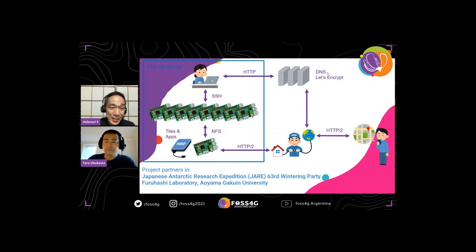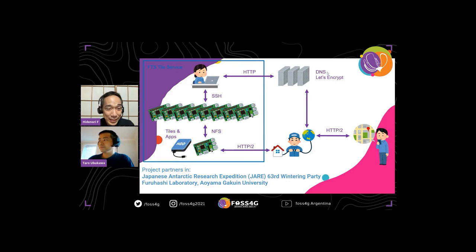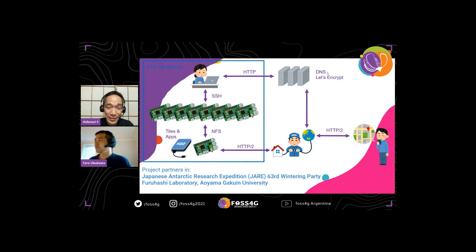The important thing is that I am working with new partners. One is the Japanese Antarctic Research Expedition, 63rd Wintering Party, because in Antarctica internet service is not really good. The second partner is Furuhashi Laboratory at Aoyama Gakuin University. I'm really excited to work with our new partners.